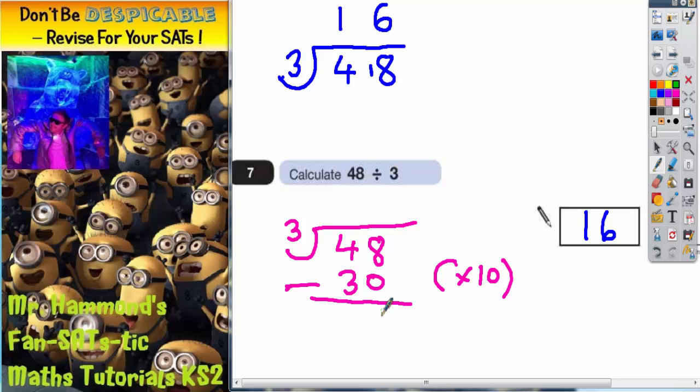8 take away 0 is 8, and 4 take away 3 is 1. So we're now down to 18, and that was 10 lots of 3.